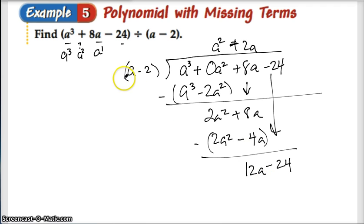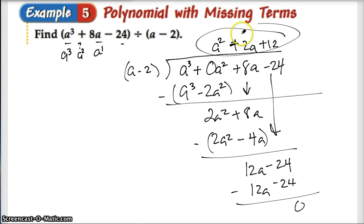A goes into 12a 12 times. Notice where I'm putting this answer, constant over constant. 12a minus 24. I have no remainder. And this was my answer. So maybe I could have factored this. But alas, I didn't need to because I have the power of long division.